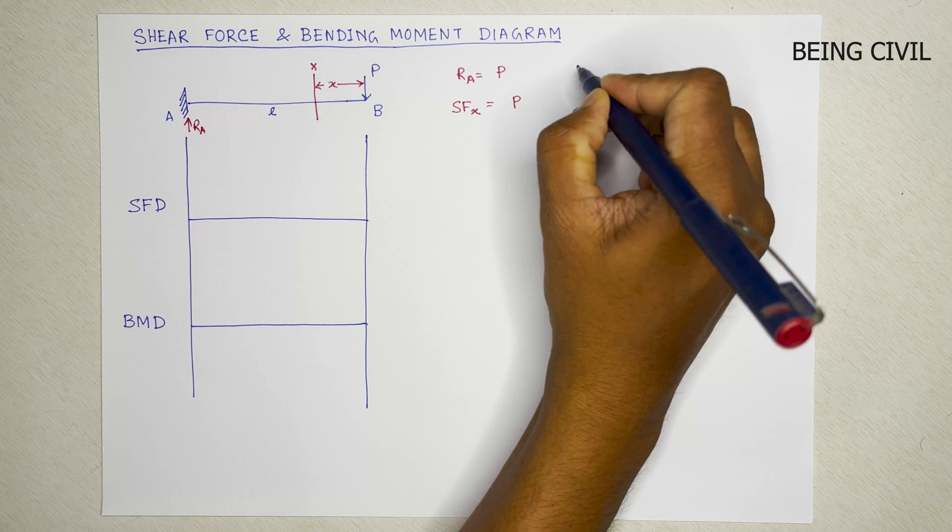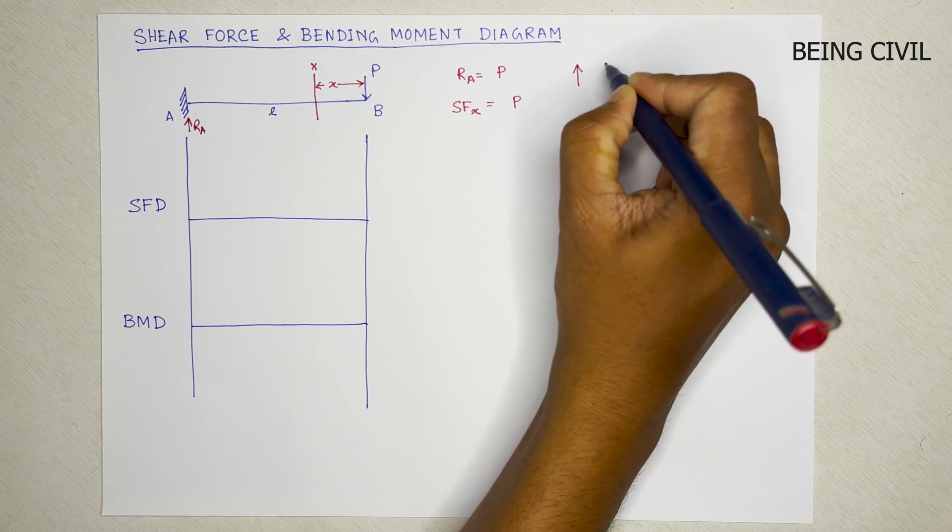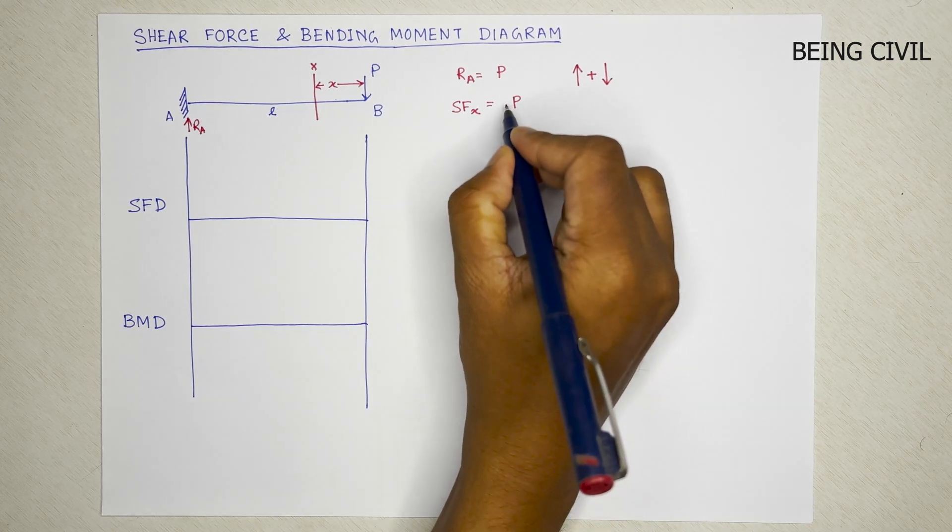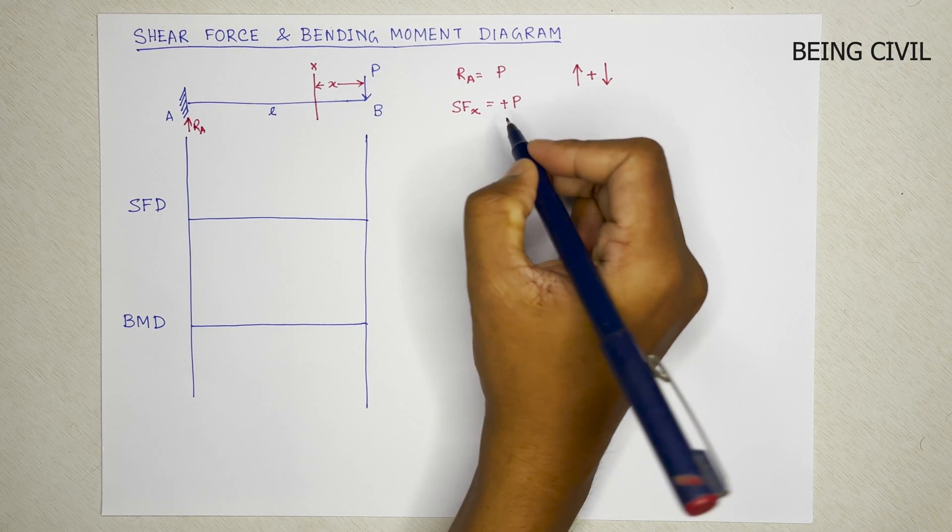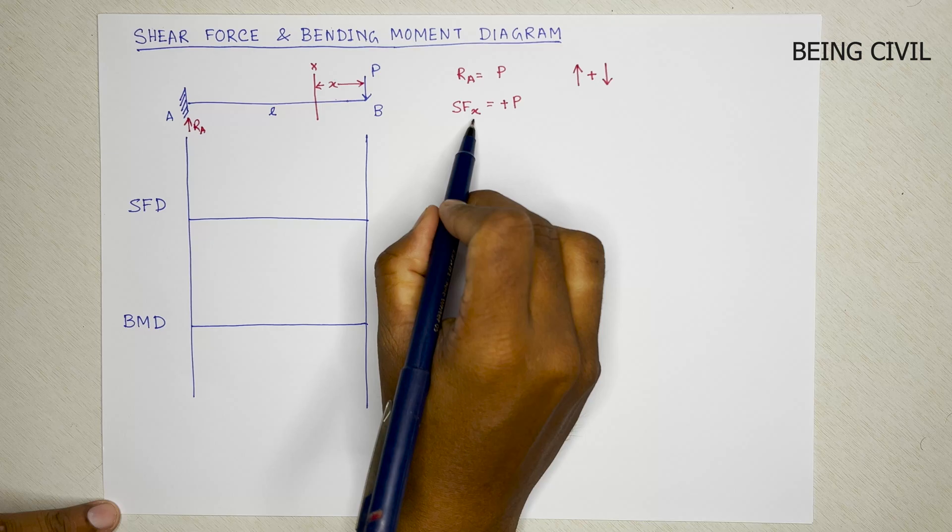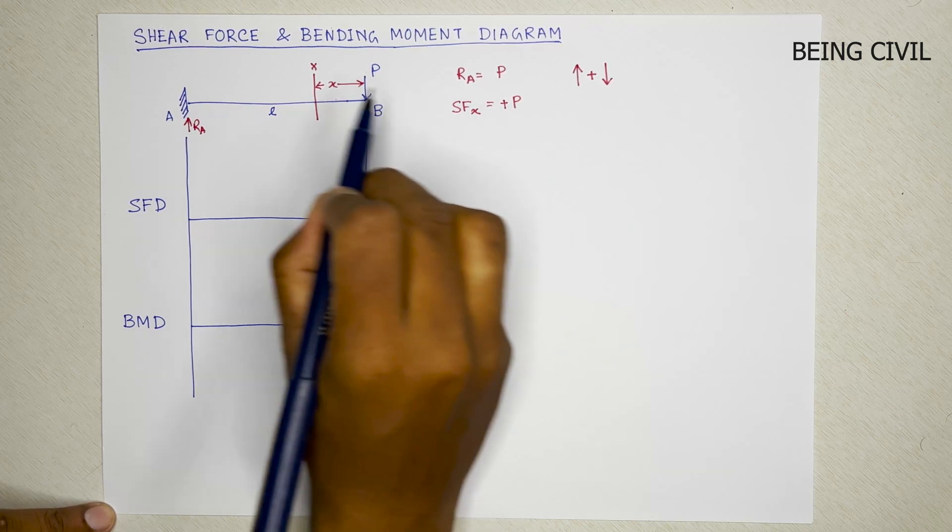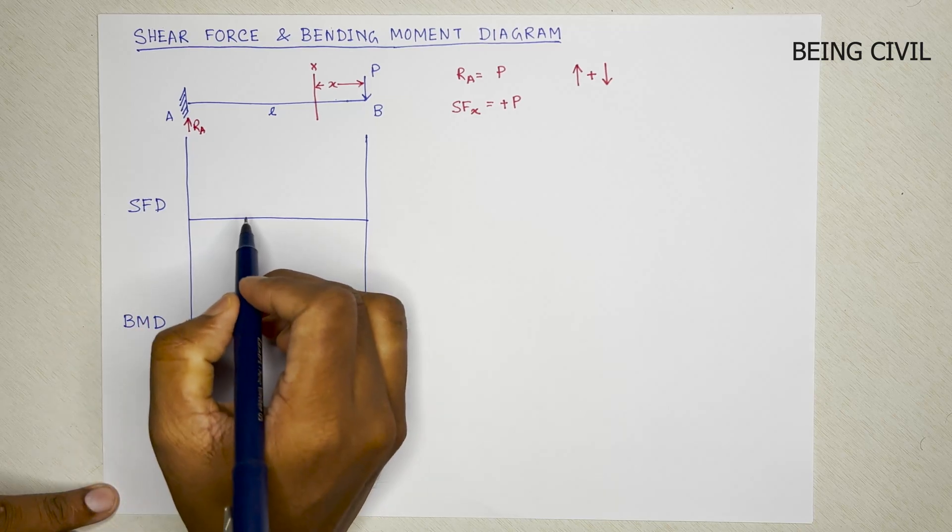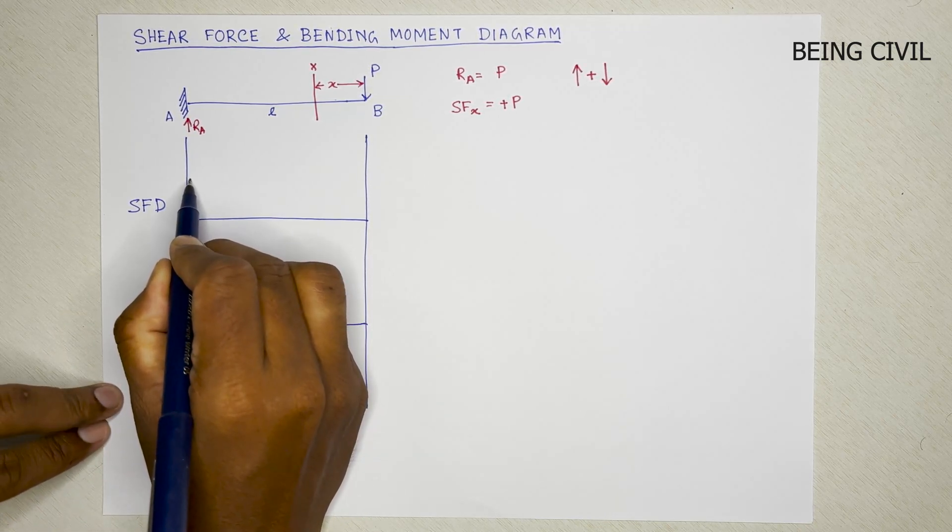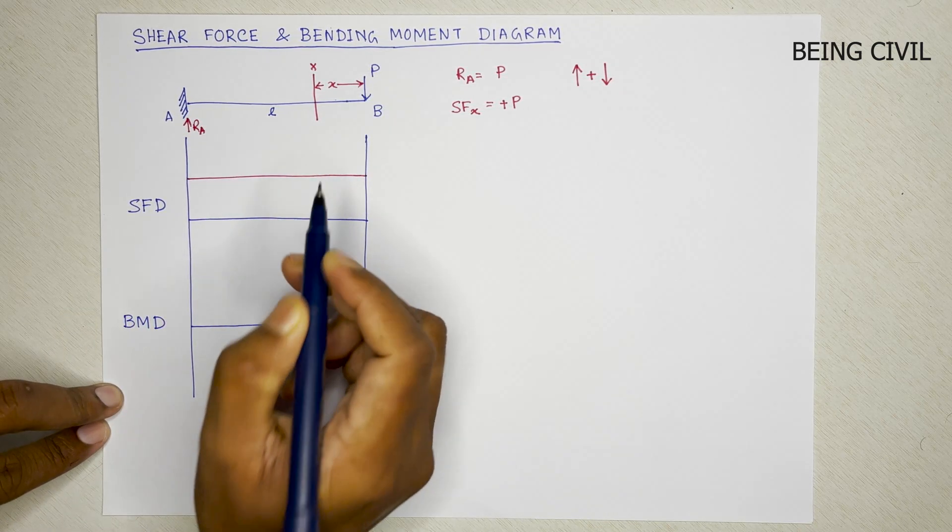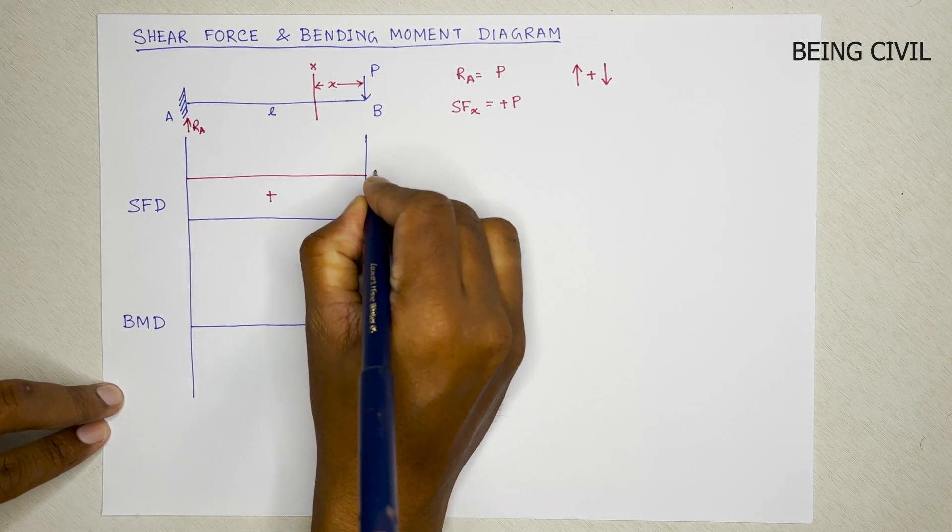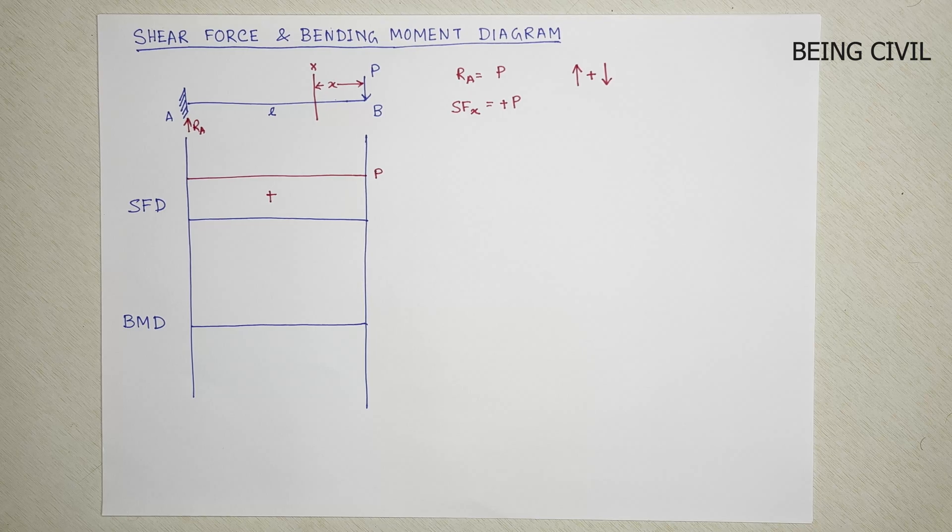And the sign is like this, left side up, right side down. So it is of positive nature. So this is positive. You see the shear force is not dependent on X, so it will be constant throughout the beam. So the shear force diagram is constant and is of positive side and the coordinate is P.